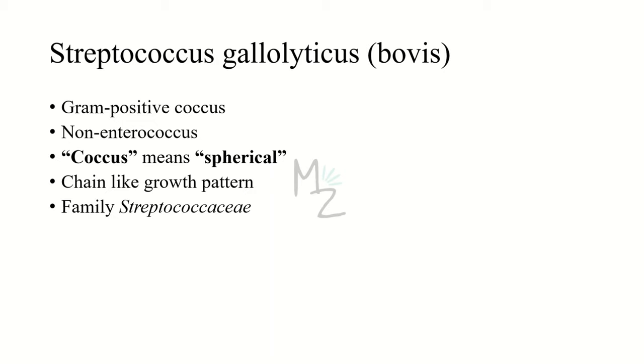The word coccus means spherical, so this bacterium is ovoid or spherical in shape and has a chain-like growth pattern. Why? Because the word strep means chain.